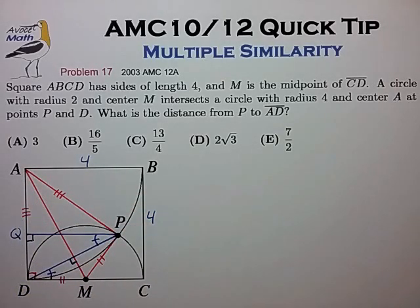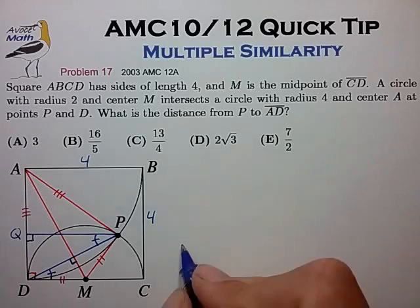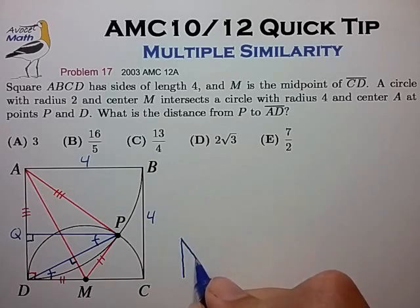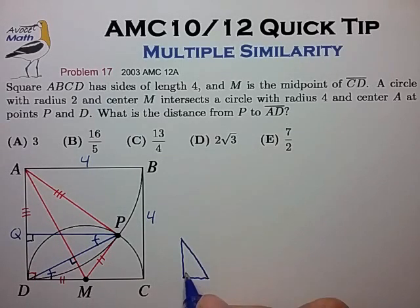And all of these triangles are similar to kind of a base reference similar triangle, a 2 1 root 5 right triangle.